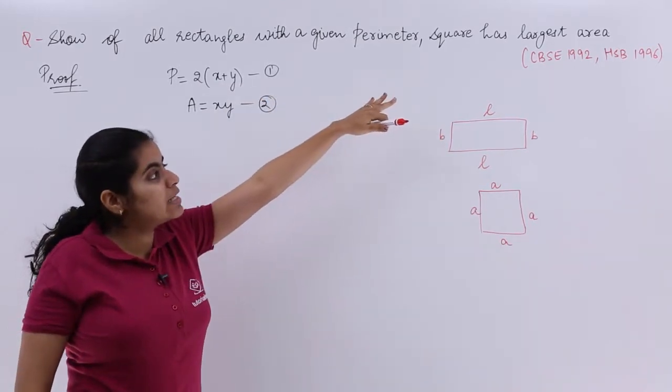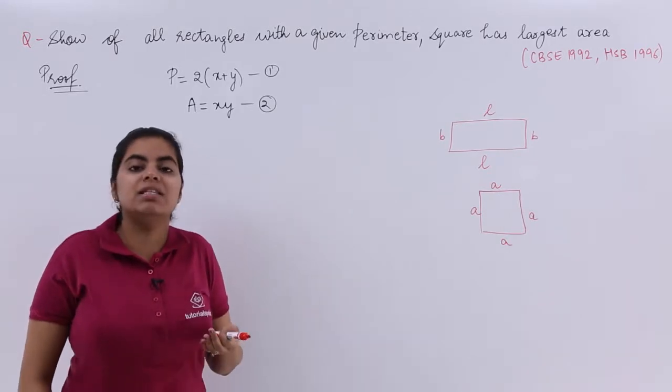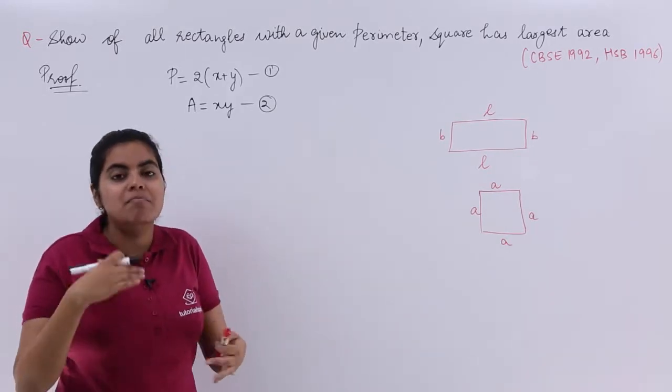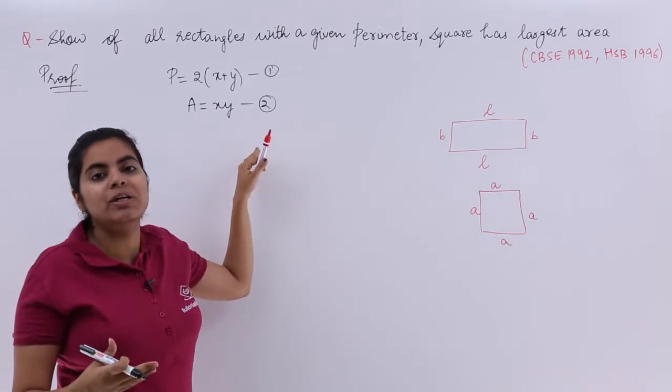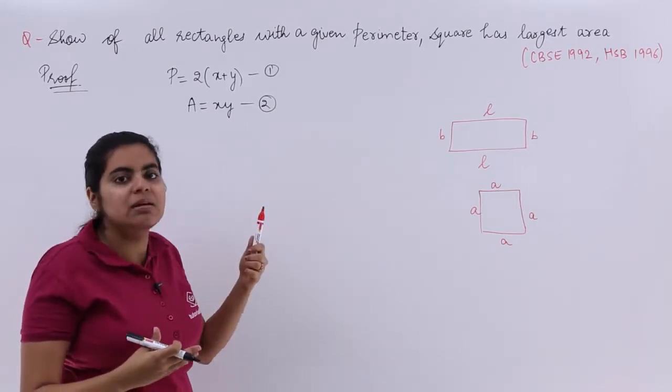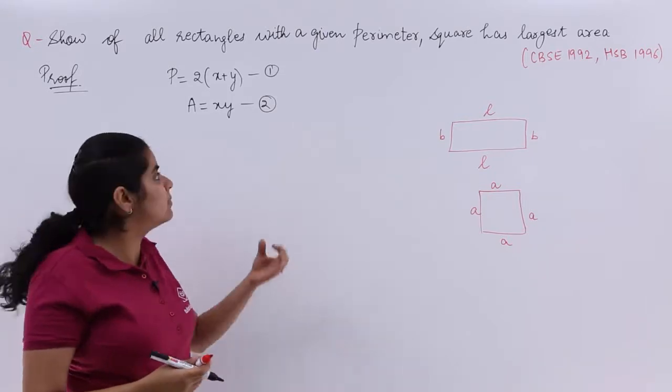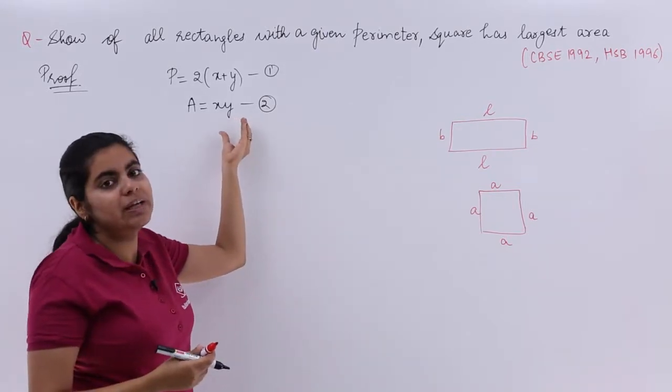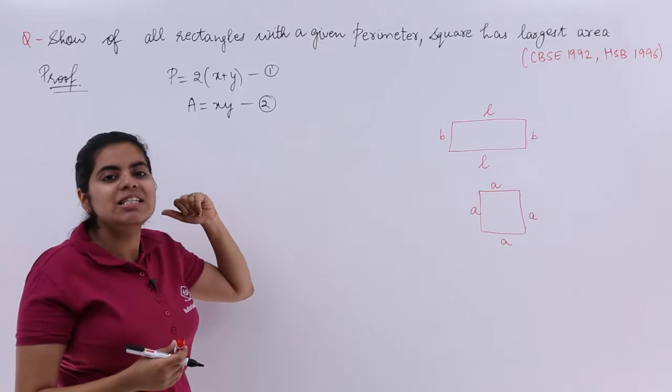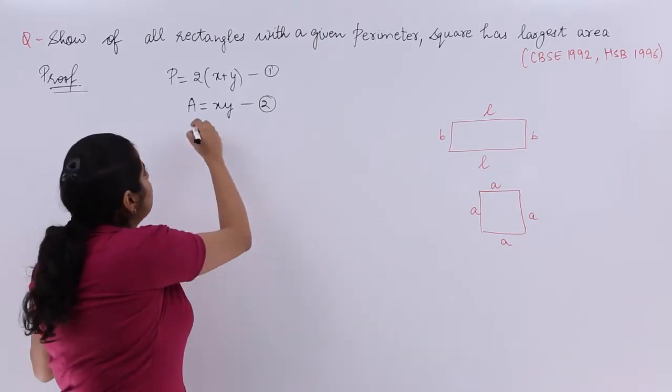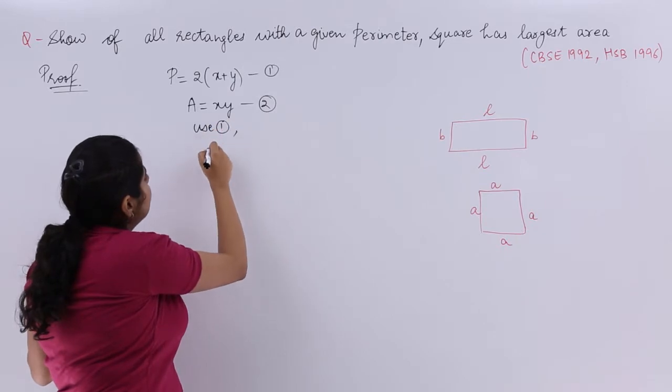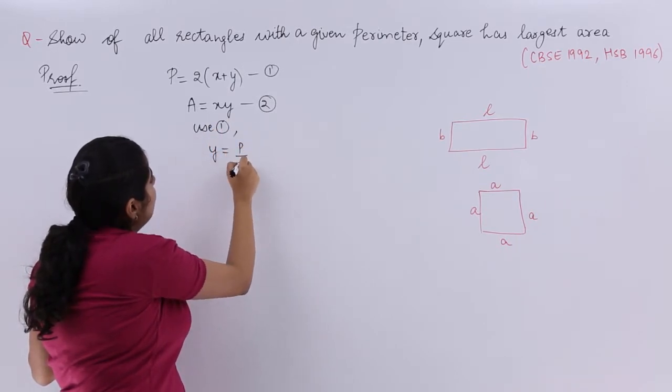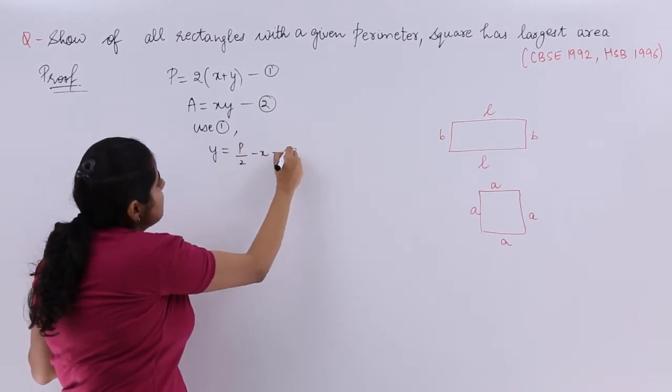What does it require? It requires the largest area. Largest area means you have to maximize the area. The differentiation has to be done of equation number 2. But maximizing, minimizing, differentiation is possible with respect to one variable. Here we have two variables, so we have to eliminate Y. You use equation 1 to find out Y. Y equals P by 2 minus X. This is equation number 3.